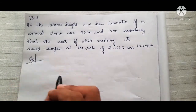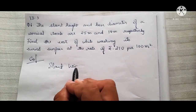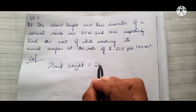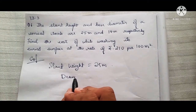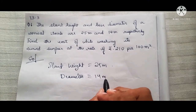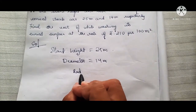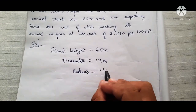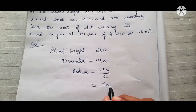We'll first write down the given values. Slant height is given as 25 meters and diameter is given as 14 meters. We need to convert the diameter into a radius, so 14 divided by 2 gives us a radius of 7 meters.